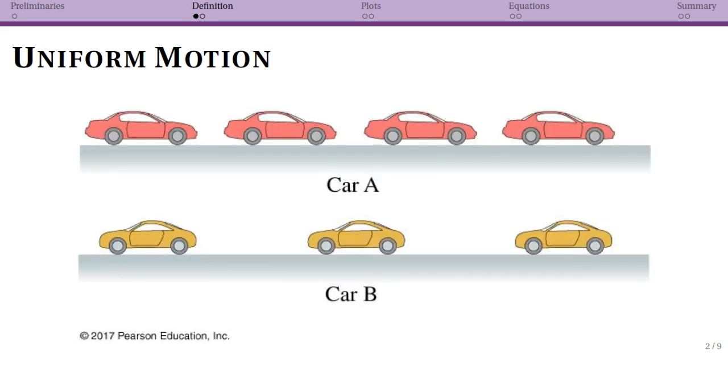So to briefly talk about what uniform motion is, it is when an object is traveling at a constant speed in the same direction. So another way to express the same idea is that you have a constant velocity.